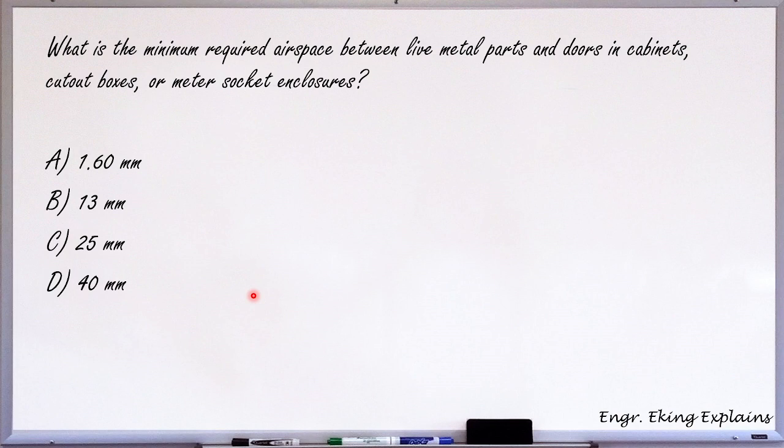what is the minimum required airspace between live metal parts and doors in cabinet, scout outboxes, or meter socket enclosures?